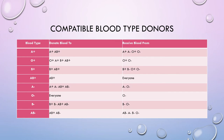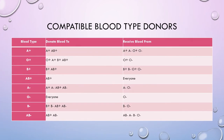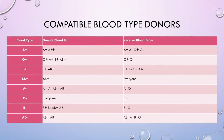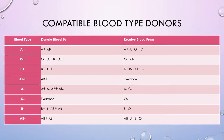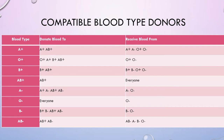So if you have A positive blood type, you can donate to A positive or AB positive, and you can receive blood from A positive, A negative, O positive, or O negative. With O positive blood type, you can donate blood to O positive, A positive, B positive, and AB positive, and you can receive blood from O positive and O negative.